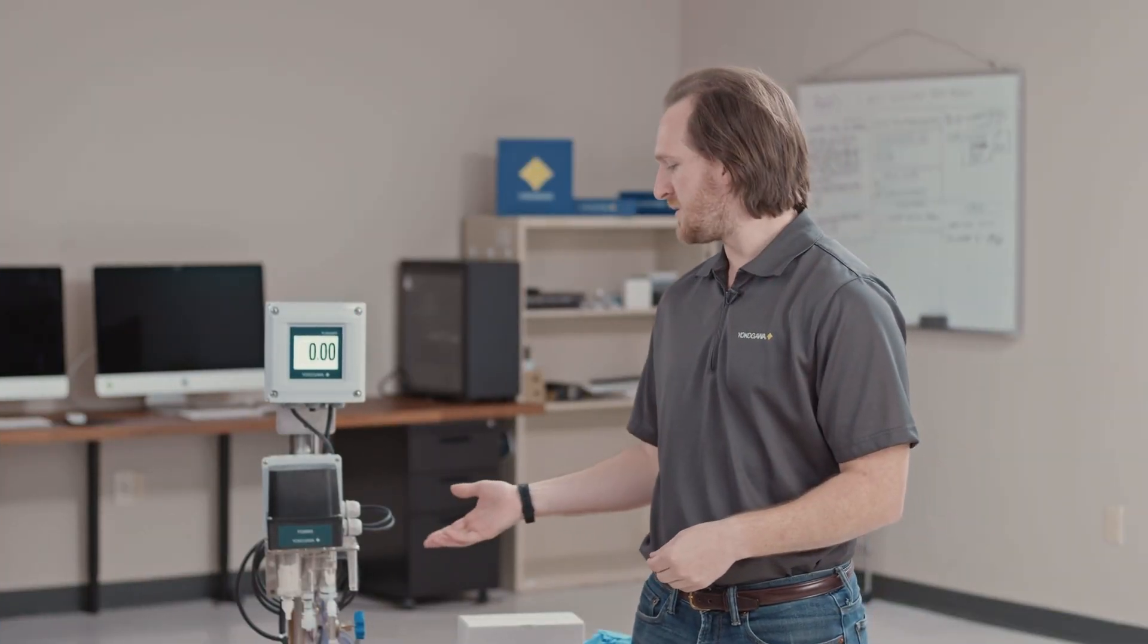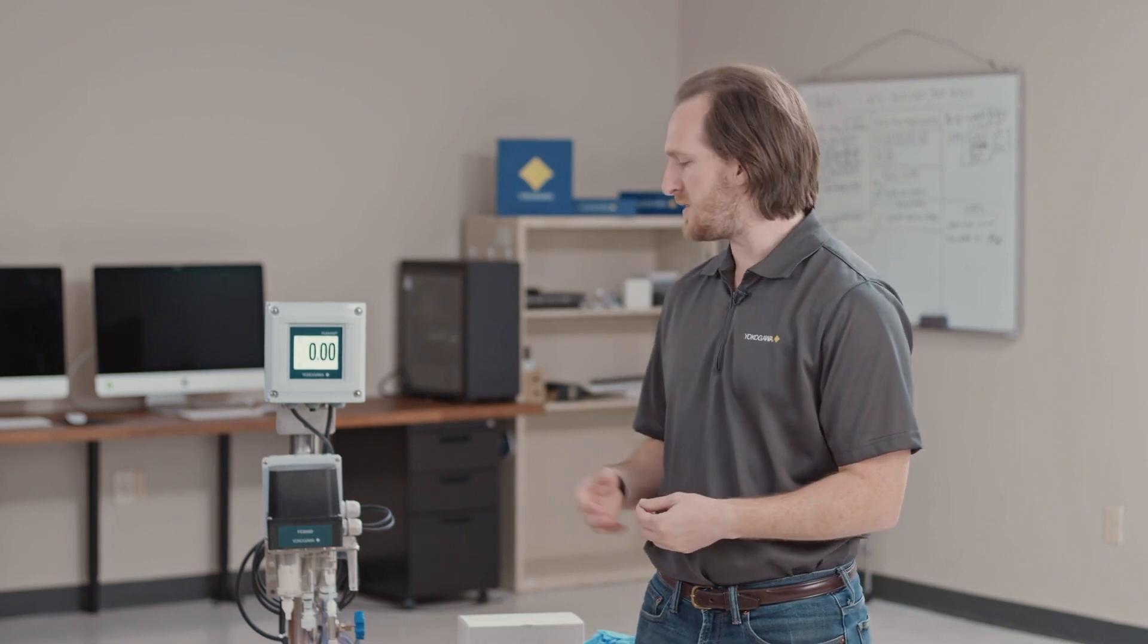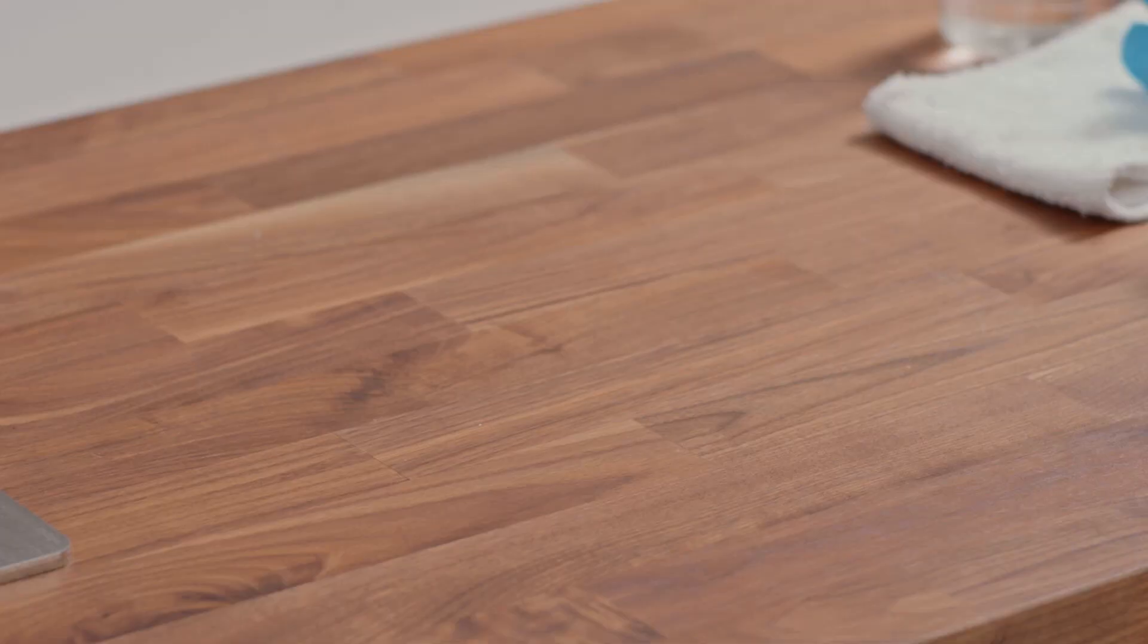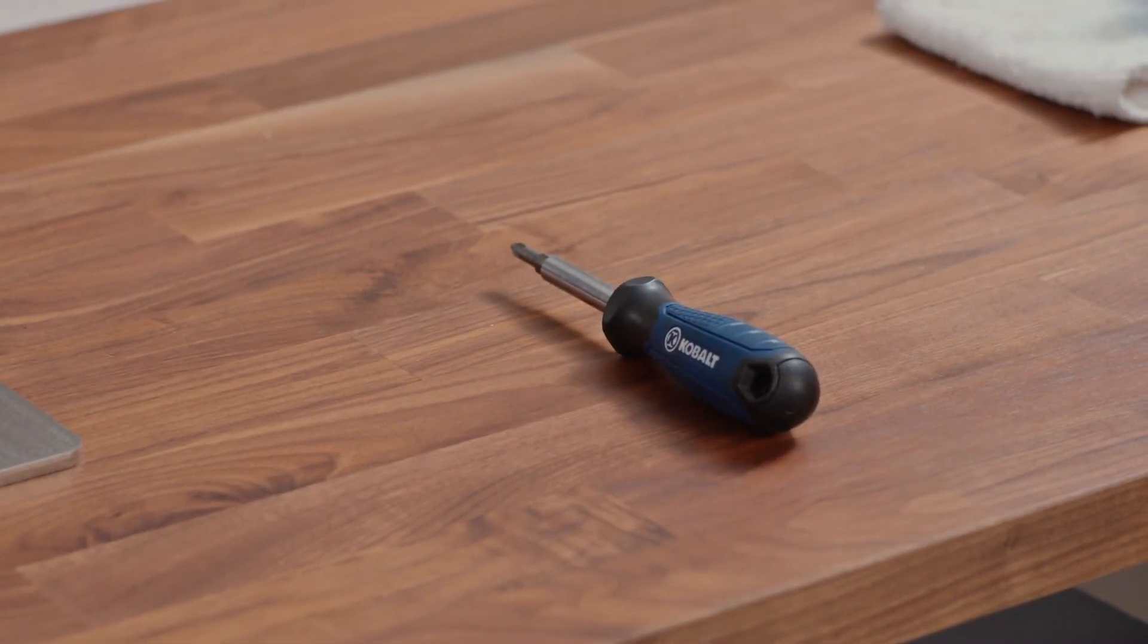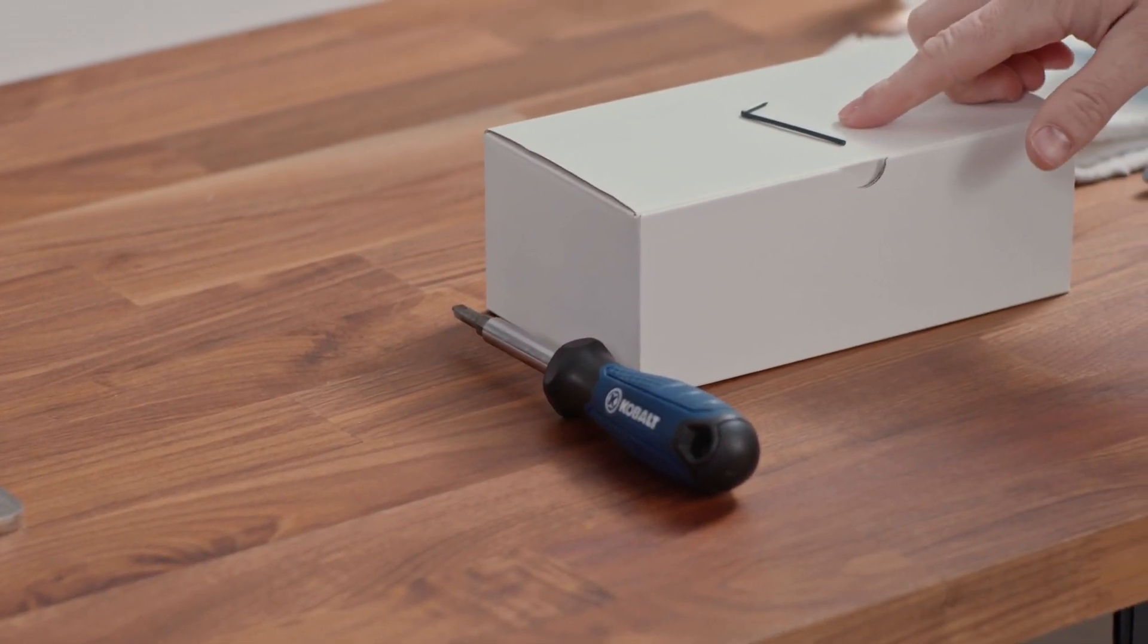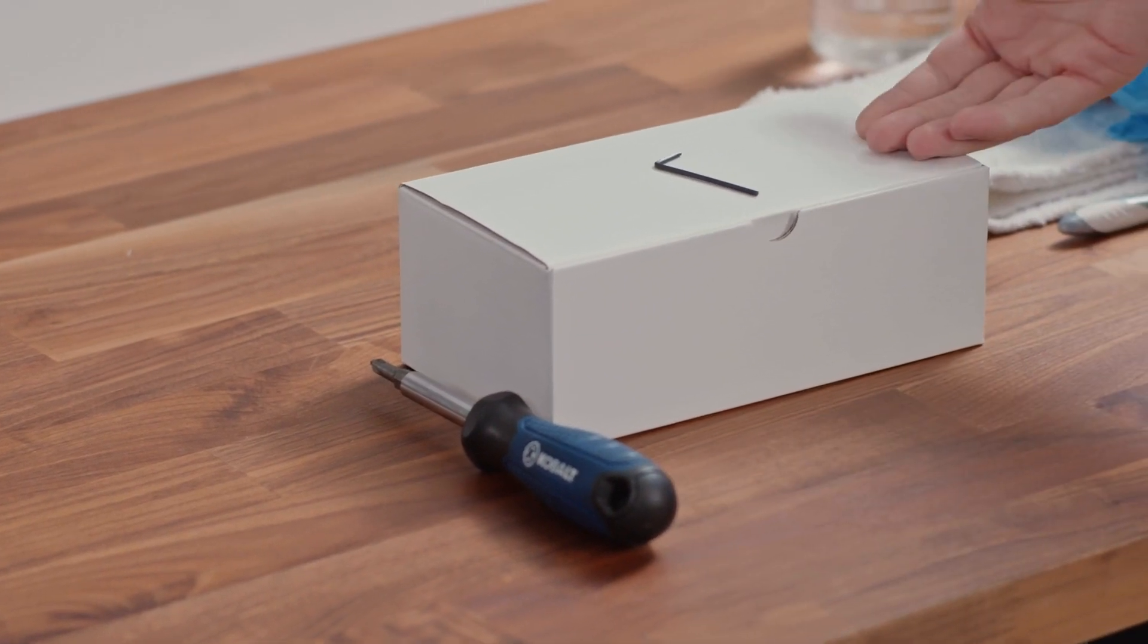The next maintenance item we'll cover today is how to change your measurement electrode as well as polish and maintain it. To change the measurement electrode, you will need a Phillips head screwdriver as well as the two millimeter Allen key that was included with your FC-800D.